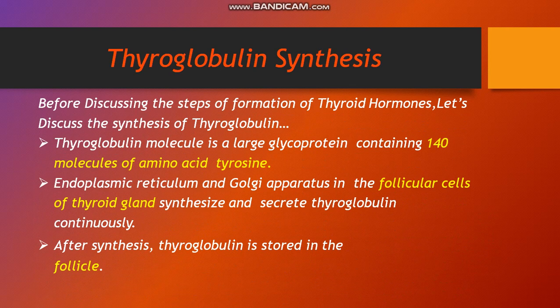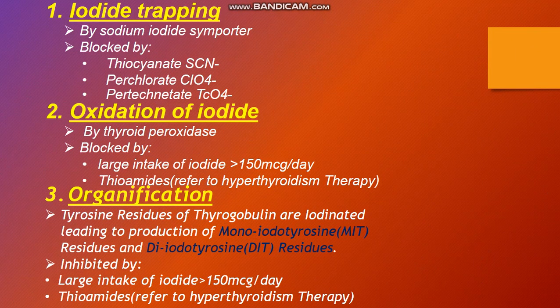Before discussing the steps of thyroid hormone formation, let us discuss the synthesis of thyroglobulin — a heavy-weight protein present in the colloid within the follicles. The thyroglobulin molecule is a large glycoprotein containing 140 molecules of the amino acid tyrosine. The endoplasmic reticulum and Golgi apparatus in the follicle cells synthesize and secrete thyroglobulin continuously. After synthesis, thyroglobulin is stored in the follicle.